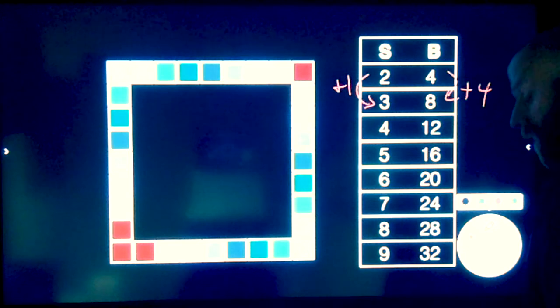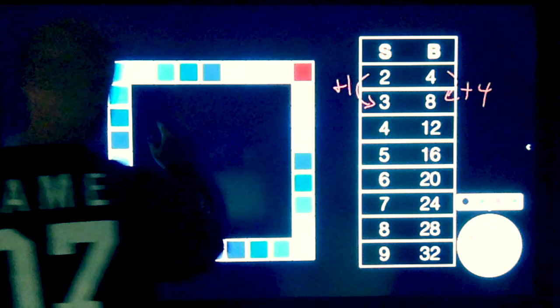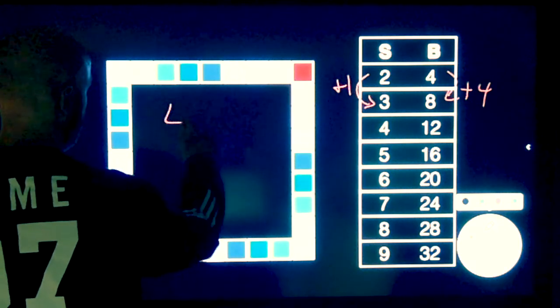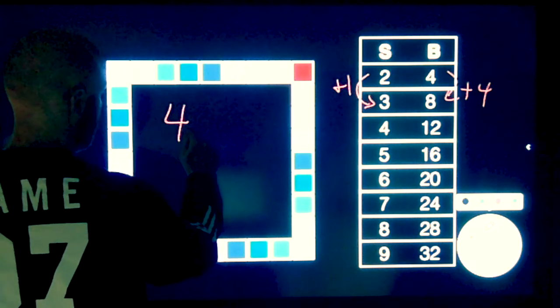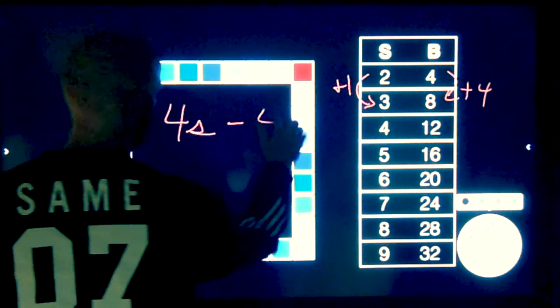And that's where in the first Borderline of Sanity, the formula, if you remember, was four times the side length, and then minus four.